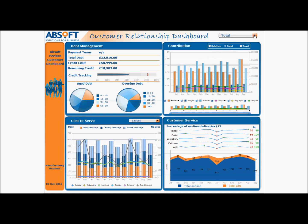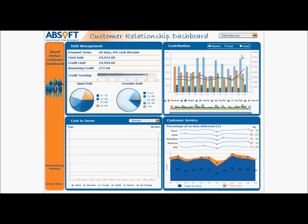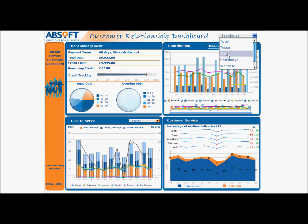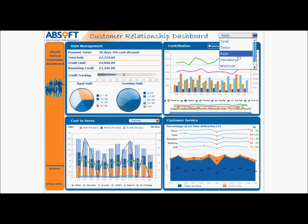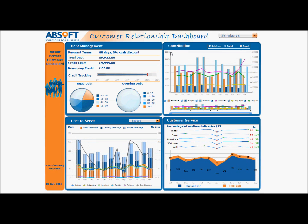If we use this drop-down box on the right we can filter on specific customers to analyse individual performance. If we select for example Sainsbury's, then we can see the individual levels of debt along with the specific payment terms associated with that customer. We can see that this customer is quite near their credit limit with a level of overdue debt between 21 and 30 days old. This could relate to a specific invoice under dispute, so this dashboard could be extended to allow us to jump to additional reports that would show us the specific invoice numbers making up this total.